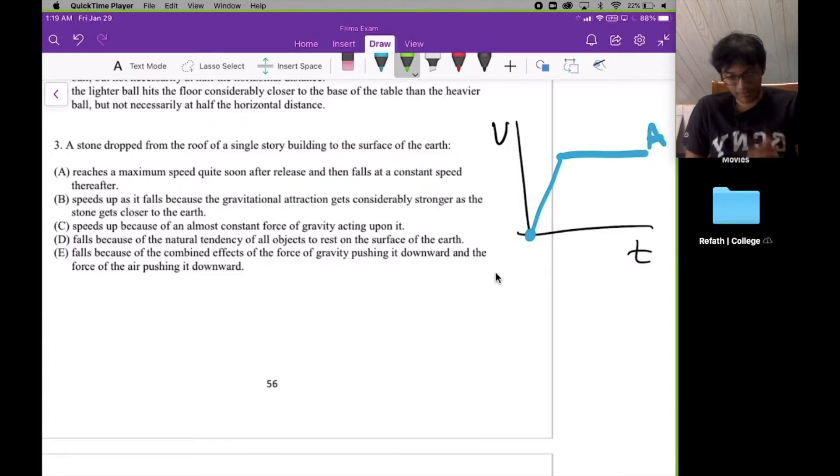So because the gravitational attraction... is that talking about the force? Because the force, the gravitational force on an object, always remains the same, doesn't matter how close or far the object is. Let me tell you what I mean. If you have the ground here and you have the object, the force on the object is always just going to be mg, because the distance from the object to the earth is so small.